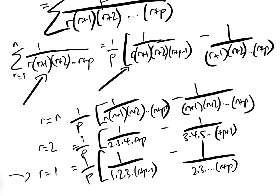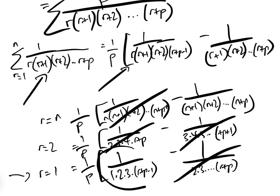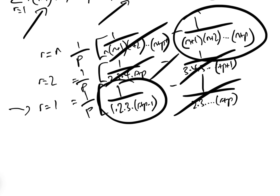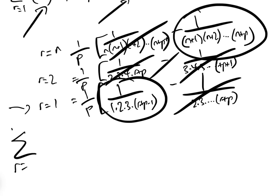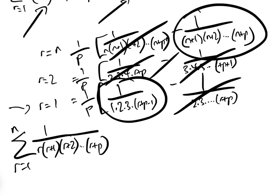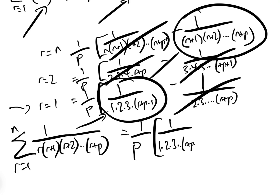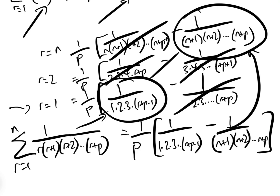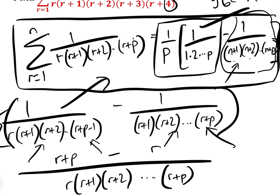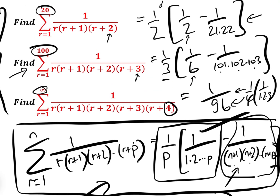When we look at these, all the middle terms cancel out, leaving just the first and last. So the sum from r equals 1 to n of 1 over r(r+1)···(r+p) equals 1/p times [1 over (1×2×3×···×p) minus 1 over (n+1)(n+2)···(n+p)] — which is the formula I gave you, and why I can solve these three by inspection. I hope you find this useful for maths olympiads. If you want to see more like this, please subscribe to the Gresti Academy YouTube channel.